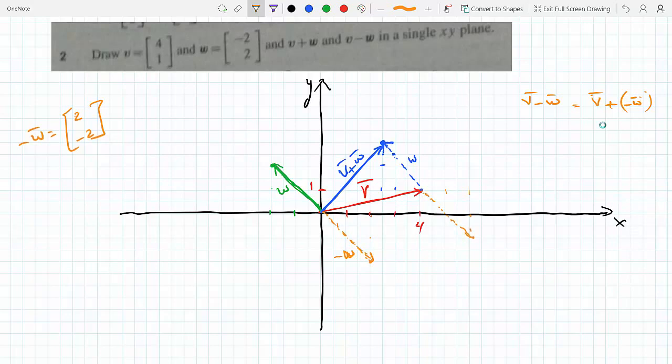Then I would join, so negative W, and I would join the tail of V to the tip of negative W. This here where they meet, maybe I should make it a little bit more exact. This would be V plus minus W, which is V minus W. This concludes this problem.